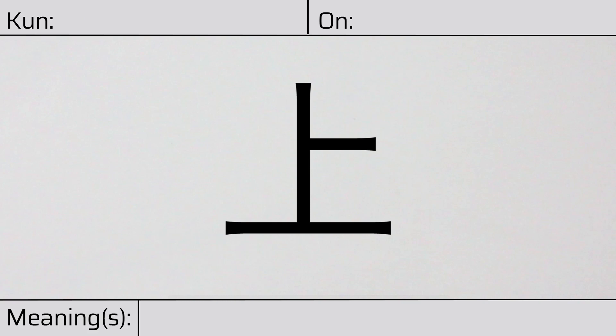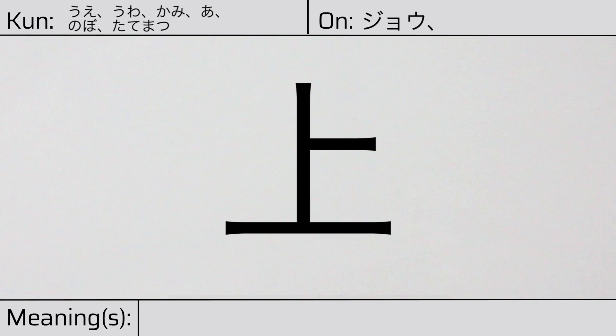Welcome to this lesson on Japanese Kanji. Today, we'll be discussing this character. This Kanji has kunyomi or Japanese readings of ue, ua, kami, a, nobo, or tatematsu. And it has onyomi or Chinese readings of jiou, shio, or shiang. This character has the meanings above or up.